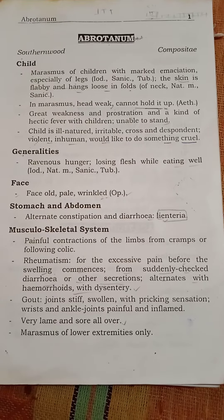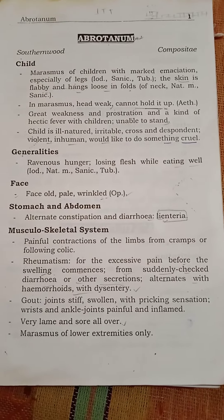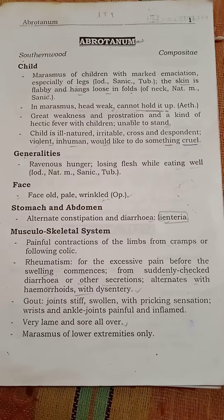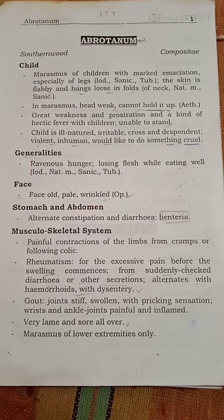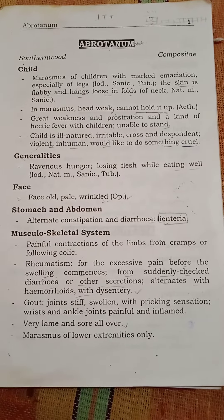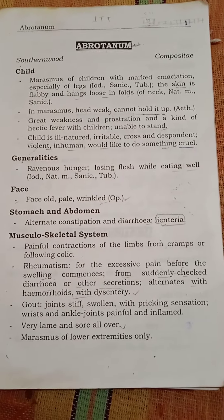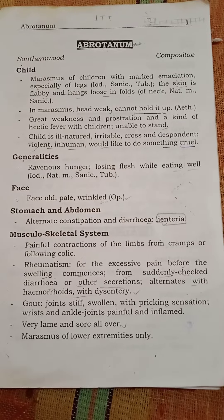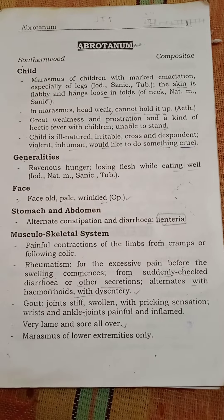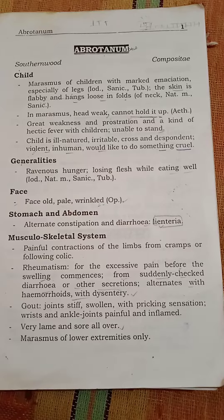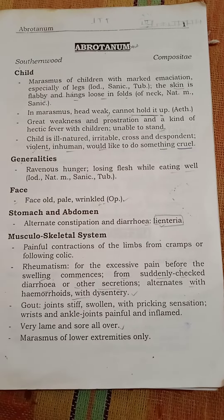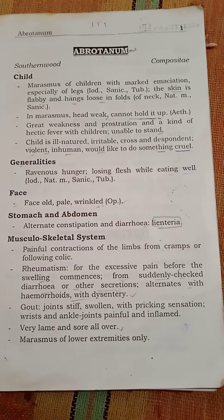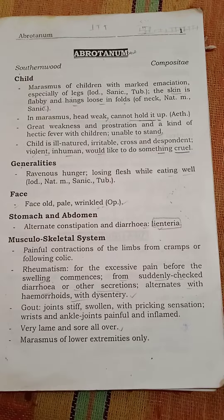The face is wrinkled. In the stomach and abdomen, there is alternate constipation and diarrhea. In the musculoskeletal system, there is painful contraction of the limbs from cramps or falling. Rheumatism presents with excessive pain before the swelling commences, from suddenly checked diarrhea or other secretions, alternating with hemorrhoids.